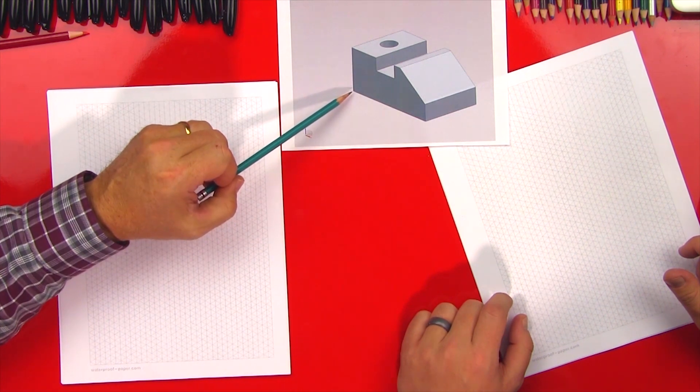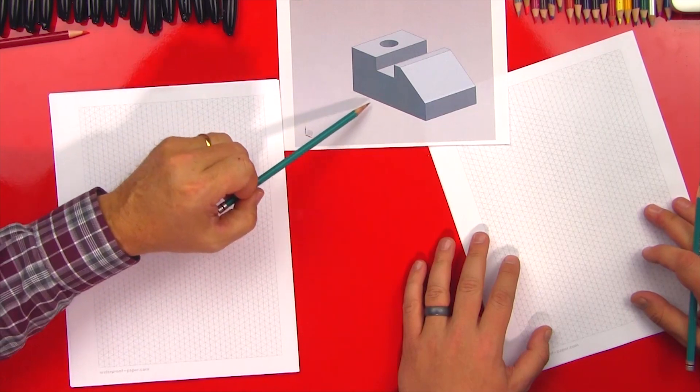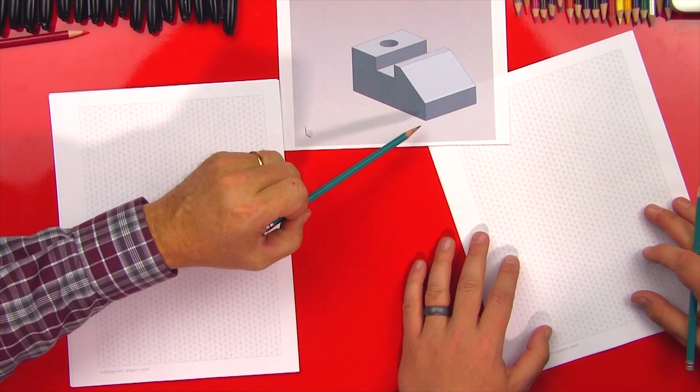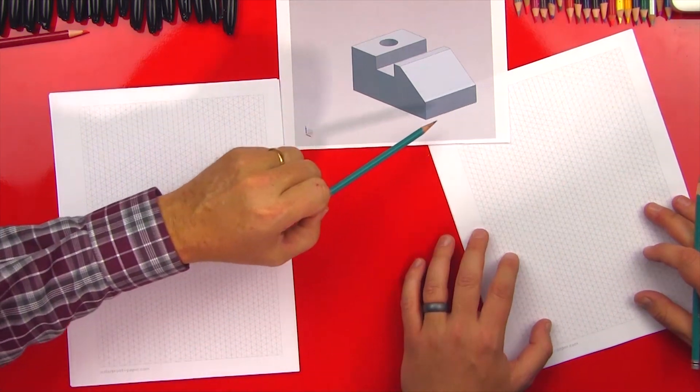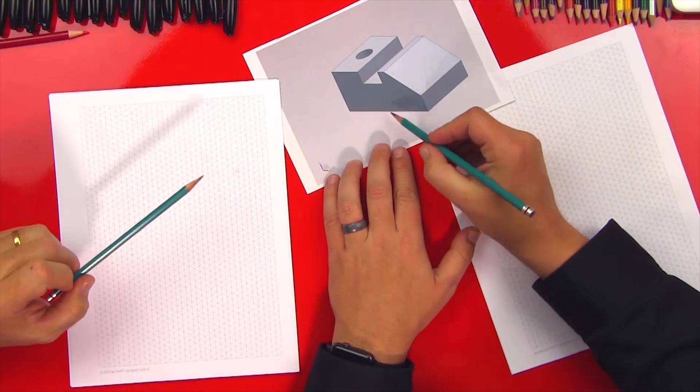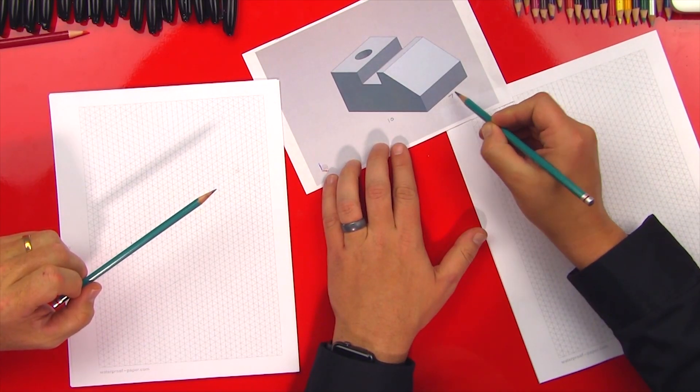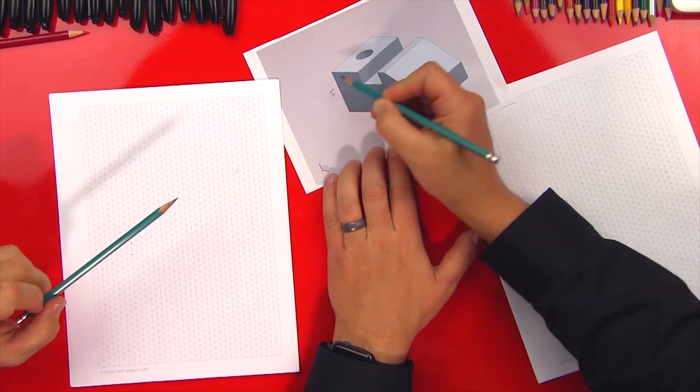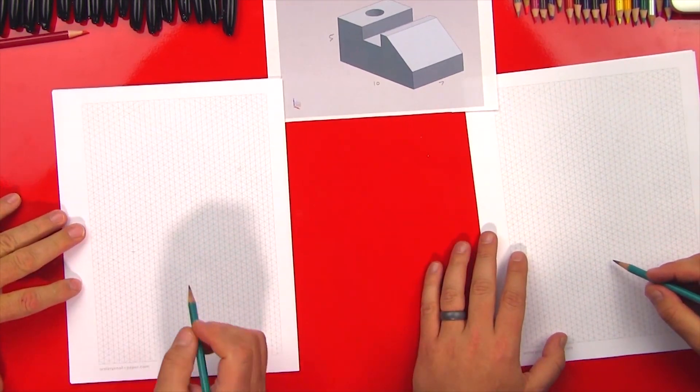And so maybe what we can do is we can look at this and say, let's imagine there's ten divisions here. There's, let's say, I don't know, seven. Let's go seven divisions across the front and let's do five up. Should we put that on there? Ten, seven, and five. And so let's just begin kind of sketching and we can talk about that.